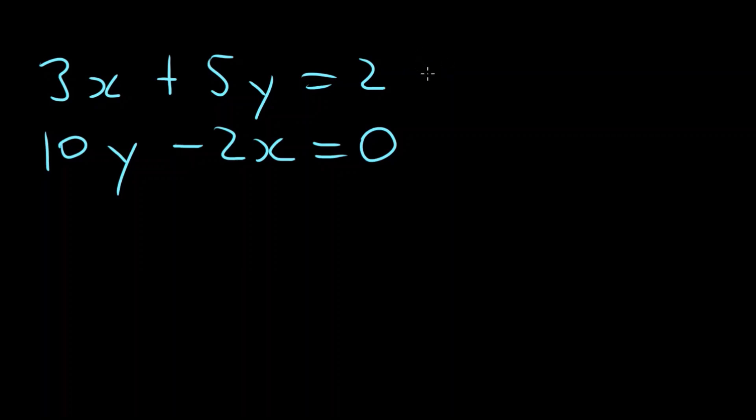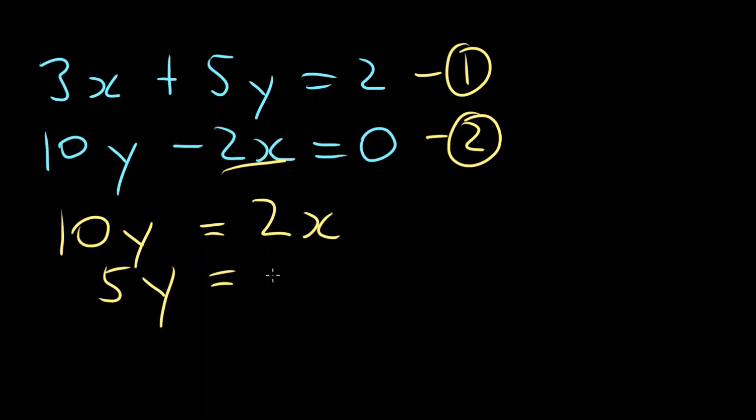Let's try another problem. How about 3x plus 5y equals 2, and the other equation 10y minus 2x equals 0. It doesn't matter what order these are in, as long as we don't confuse them. Label equation 1, equation 2. I'm thinking this one here would be easiest to get to. So 10y minus 2x equals 0. We can rewrite that as 10y equals 2x. 5y will equal x. We'll call that equation 3.